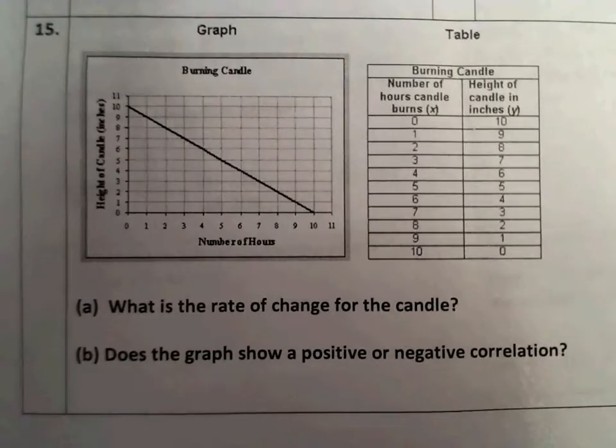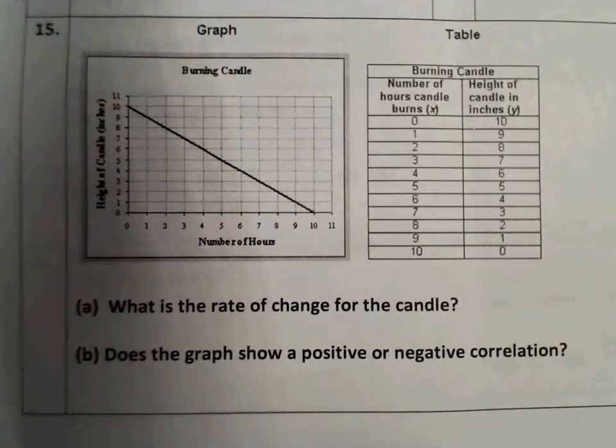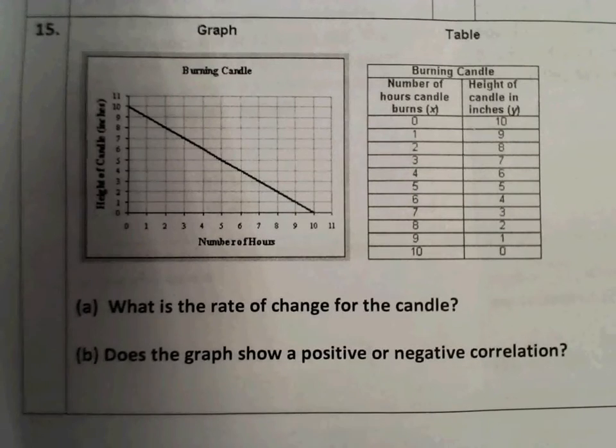We've got a graph and a table here showing time that a candle is burning and the height of the candle. We can think about what's going to happen. If you burn a candle, the longer you burn it, the shorter the candle is going to get.